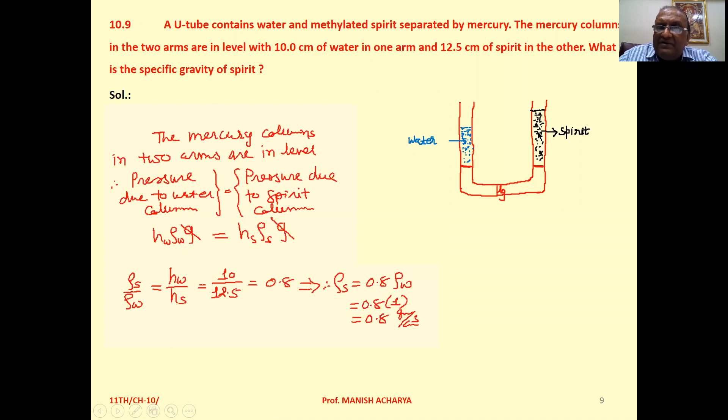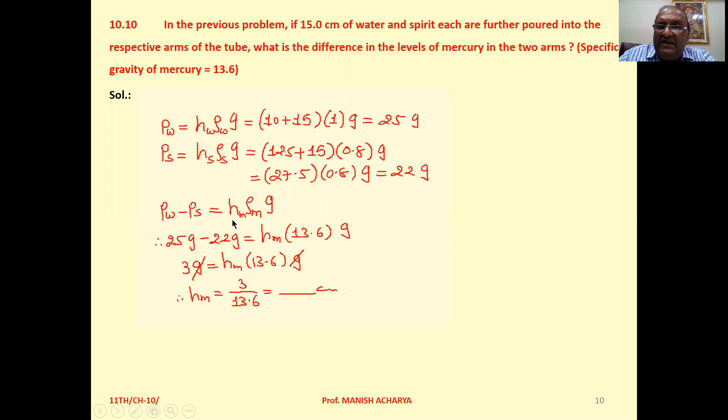So when the pressure is balanced, mercury will be steady. So mercury column height difference will balance this pressure difference.